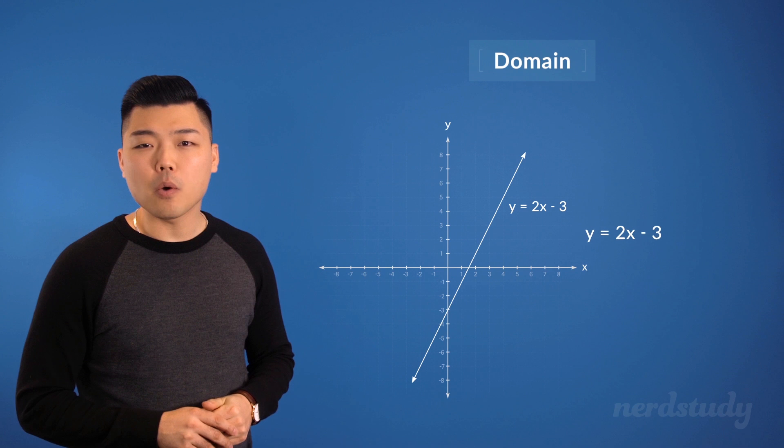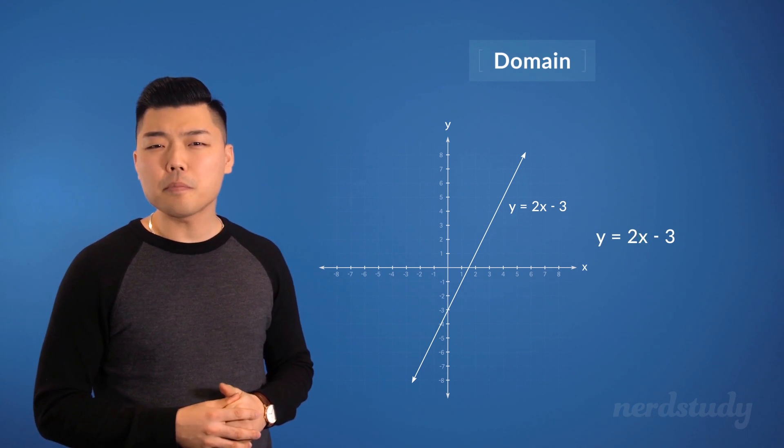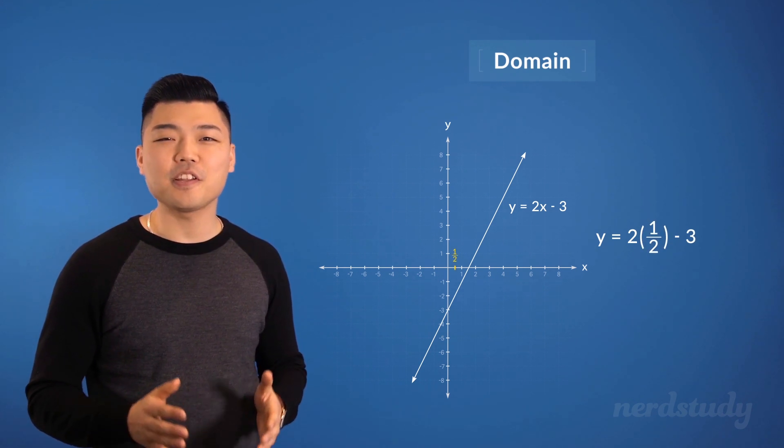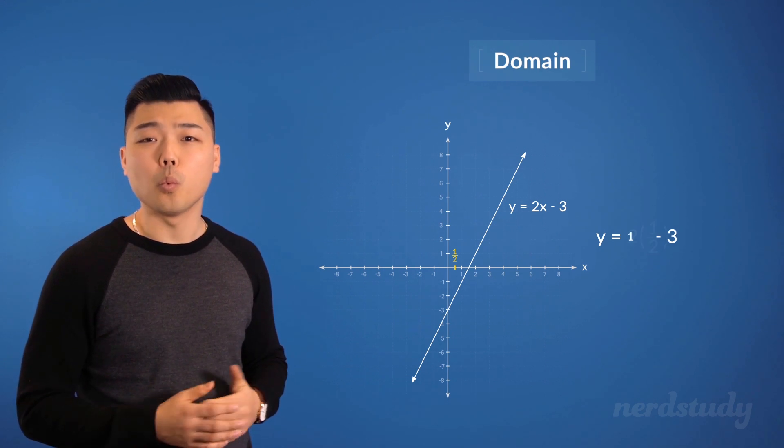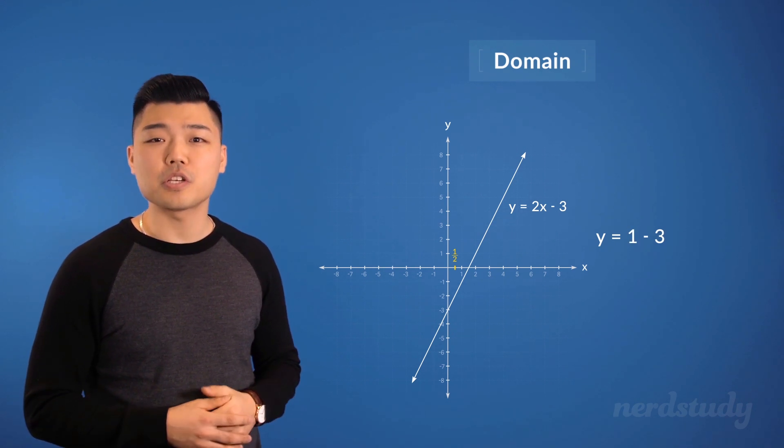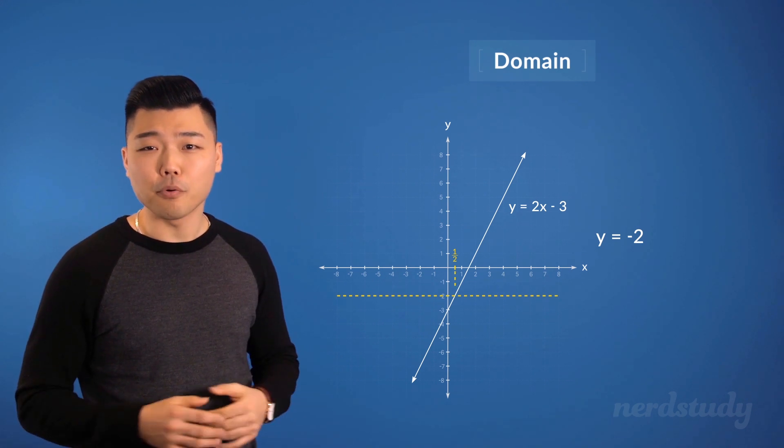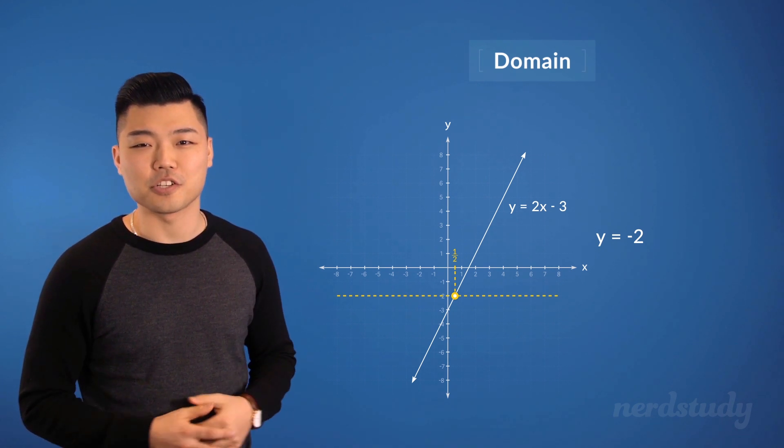Let's continue to think about what kind of number can be put into x. Would there be anything wrong with putting in a fraction into x? Definitely not. Putting in half would end up giving us 1, minus 3, which is negative 2. This is clearly a valid point on the graph, so we know that x is not limited to only integers.